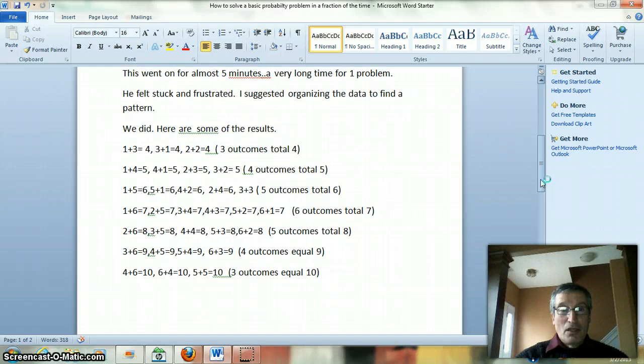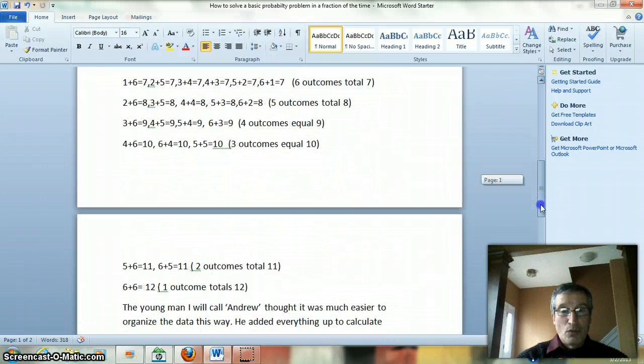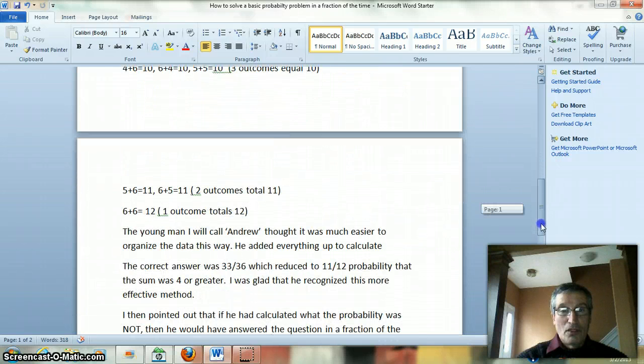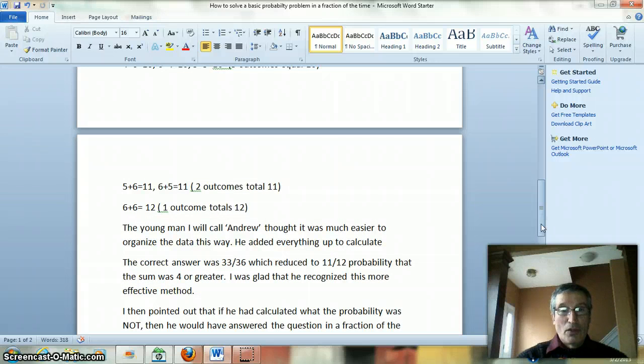1+3=4, 3+1=4, 2+2=4. So 3 outcomes total 4. 4 outcomes total 5. 5 outcomes total 6. 6 outcomes total 7. 5 outcomes total 8. And 4 outcomes equal 9. 3 outcomes equal 10. 2 outcomes total 11. And 1 outcome total 12.